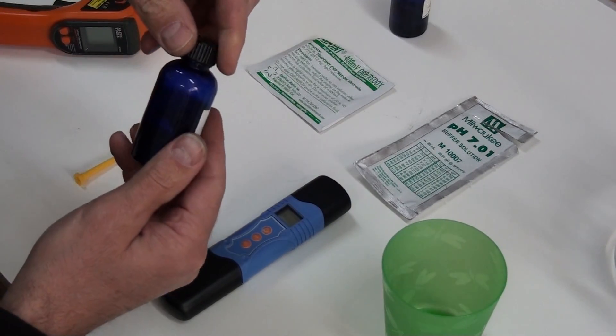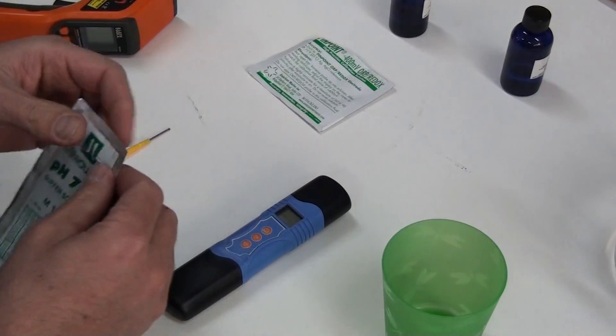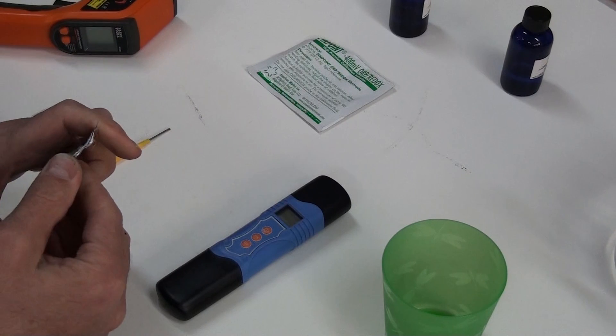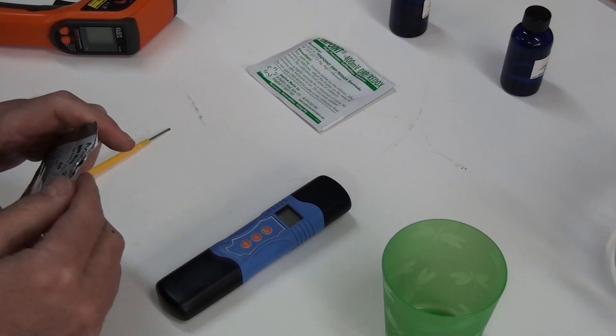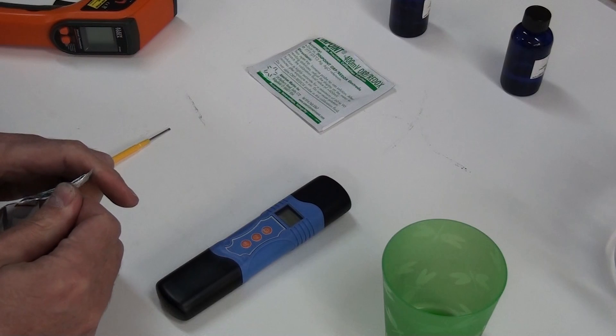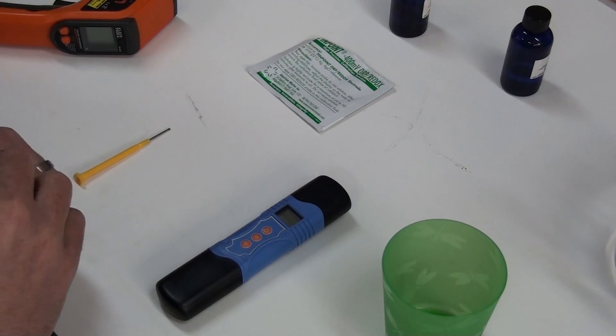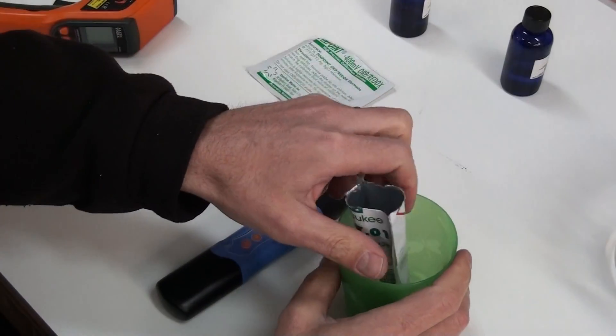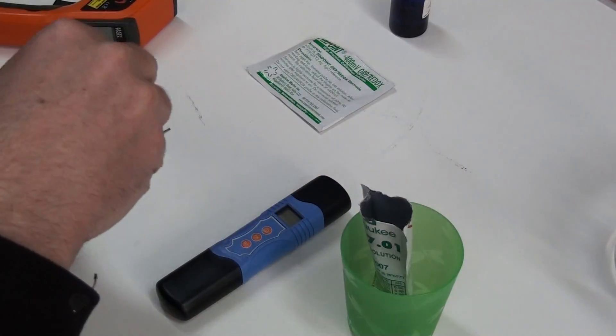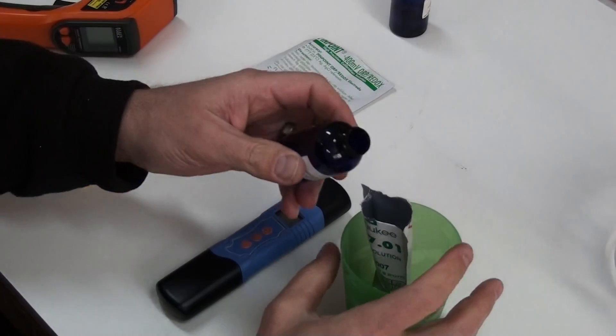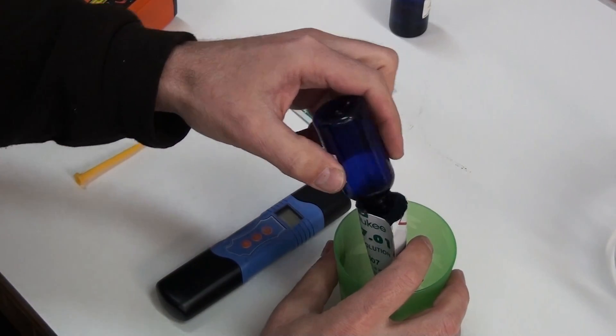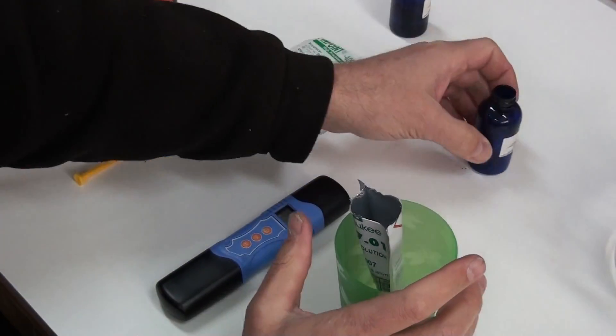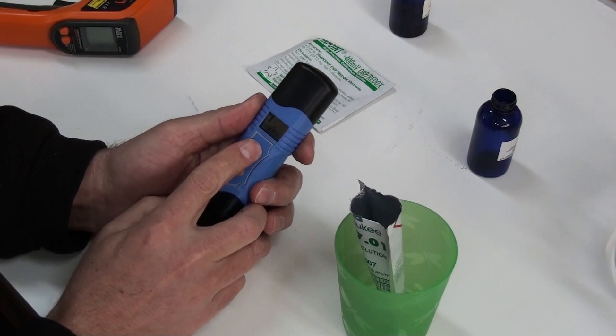What I want to do first is the pH solution and I'll go ahead and get that ready. I think the easiest way to do it is put it in this cup and we will pour the contents back into the package. Turn on our meter.